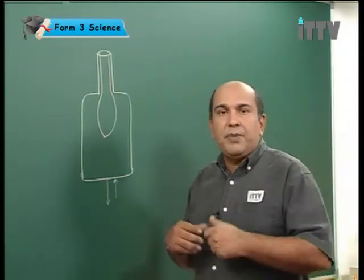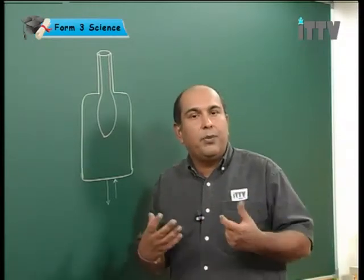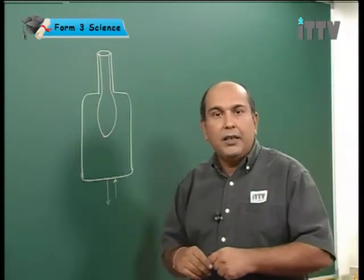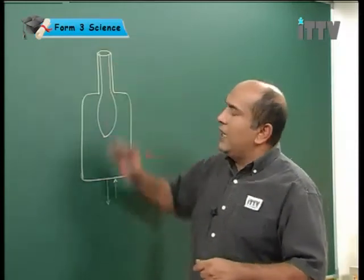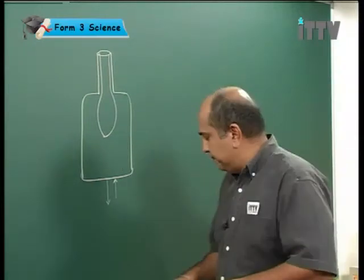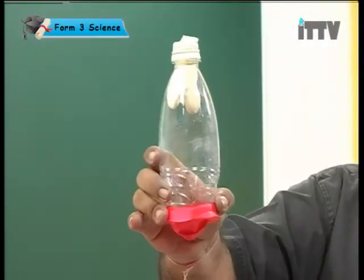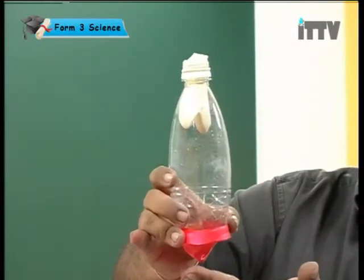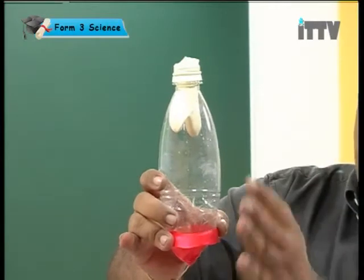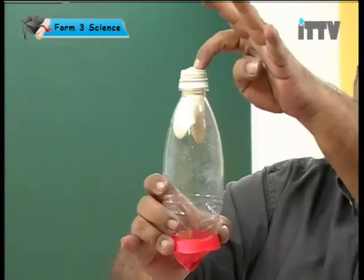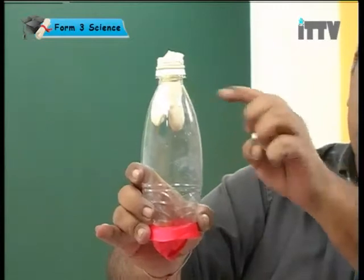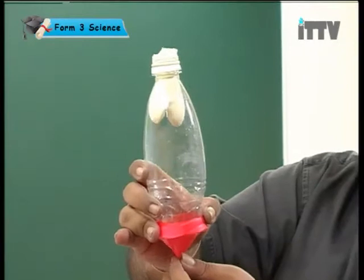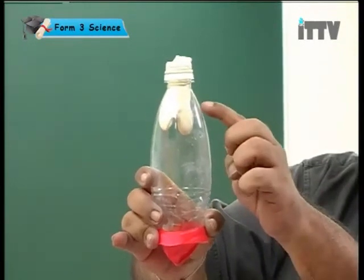This is very similar to what happens to our lungs when we are breathing. If air enters into our lungs, our lungs have to become bigger. If air is leaving our lungs, our lungs have to become smaller. So, this is the model. At the bottom of the model, I've put a cut-out balloon — this will represent your diaphragm. Up here, I've got a balloon inside the bottle — this represents your lungs.